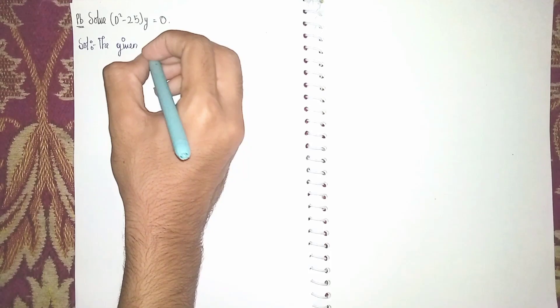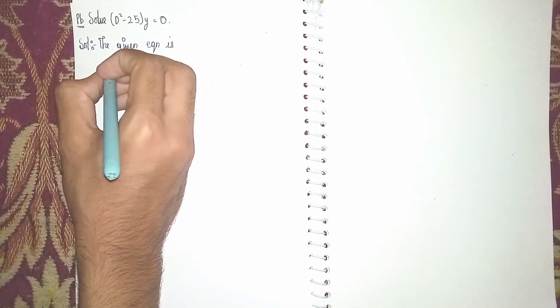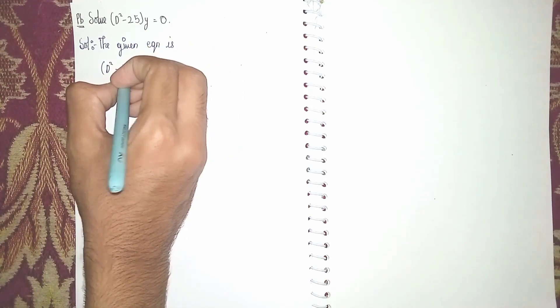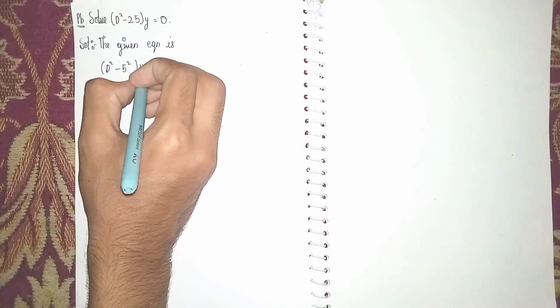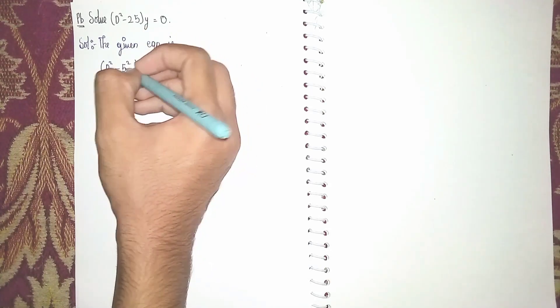The given equation is d square minus, instead of 25 we can write 5 square, into y is equal to 0. 5 square means 25, so instead of 25 we can write 5 square.